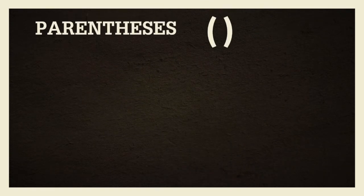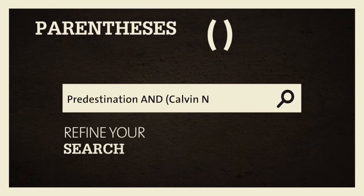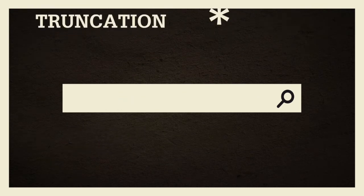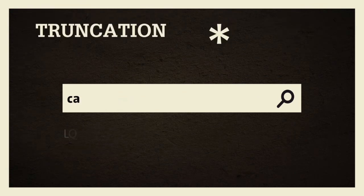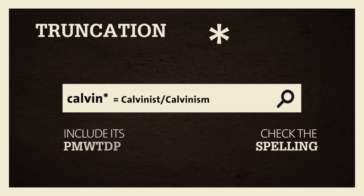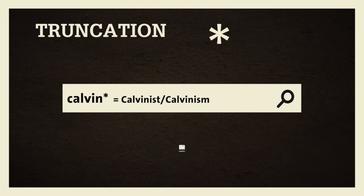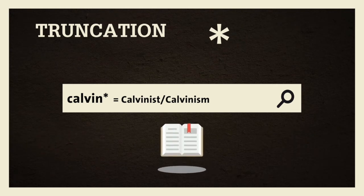First, parentheses. You can use parentheses to refine your search. TRUNCATION is used when you're not sure of a word, or when you want to include its plural form. TRUNCATION is often signified by an asterisk, but that can vary depending on the search interface used.